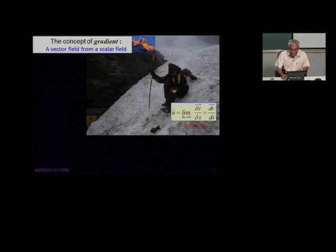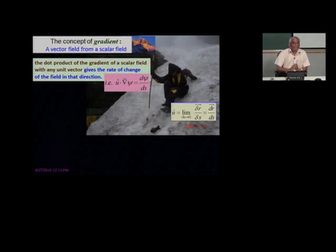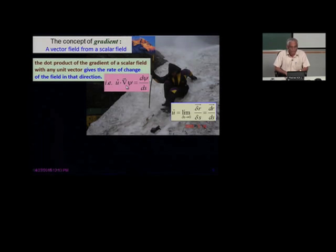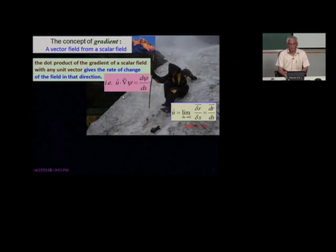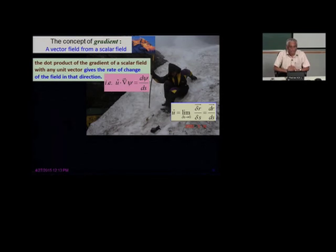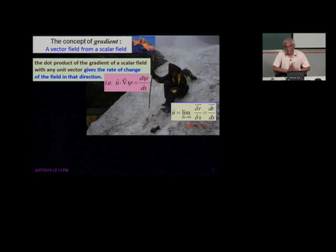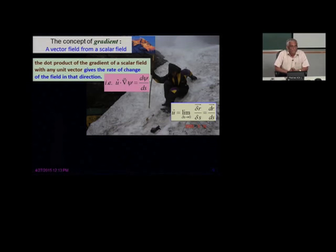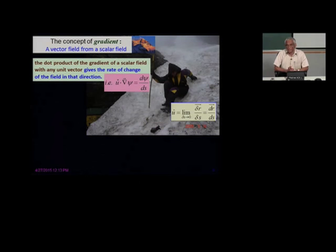So let us define a quantity called gradient. We give it a symbol and define it. This dot product gives ds. One way of looking at it is to call it by name and start describing it. This is a dot product and it gives the spatial rate of change of the field in a particular direction — u is any direction, and the rate of change in that direction is given by this. Gradient is the greatest slope.